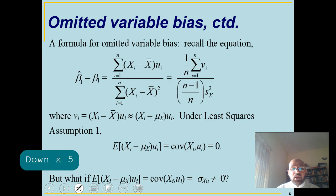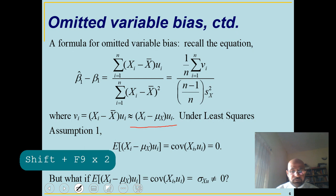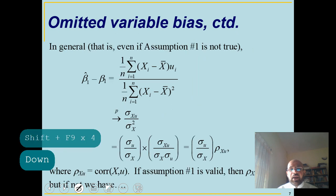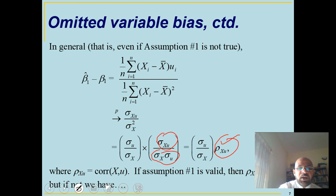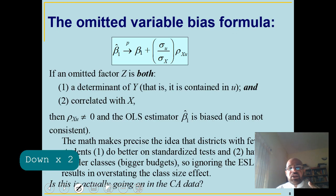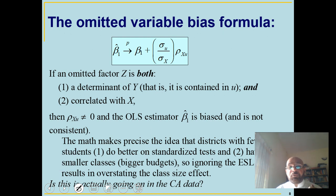As discussed in Chapter 4, if sigma_ux is not equal to zero, by manipulation this becomes rho_xu. If x and U are not uncorrelated, the expected value of beta-1-hat will not equal beta-1, so the OLS estimator will be biased. These two conditions — that the omitted variable is a determinant of Y and is correlated with an existing regressor — if satisfied and the variable is ignored, this leads to omitted variable bias.